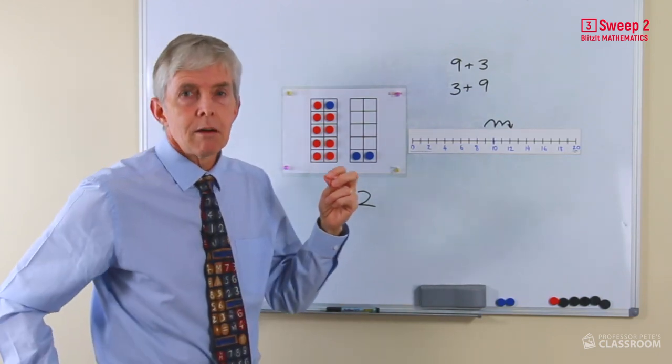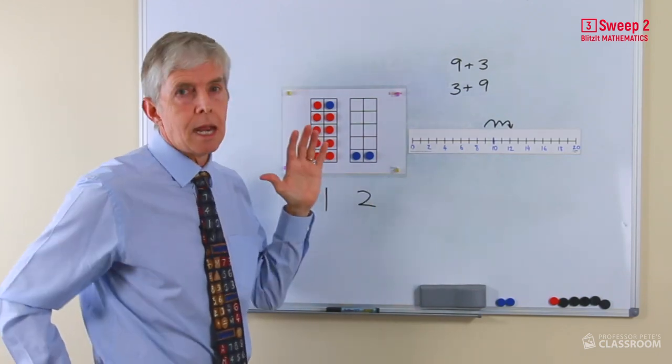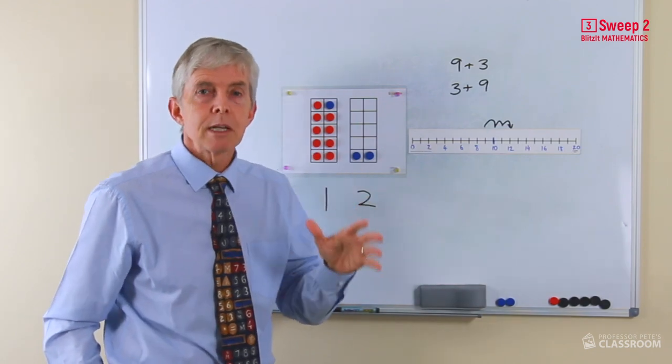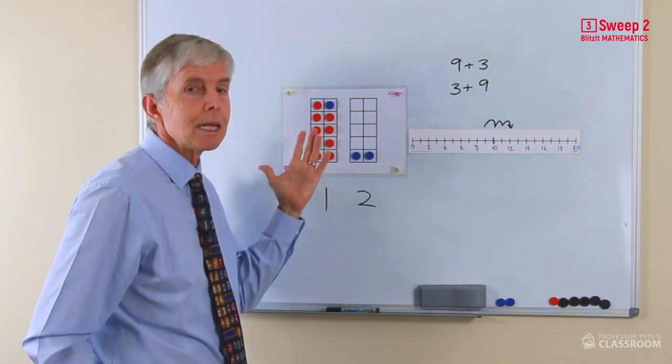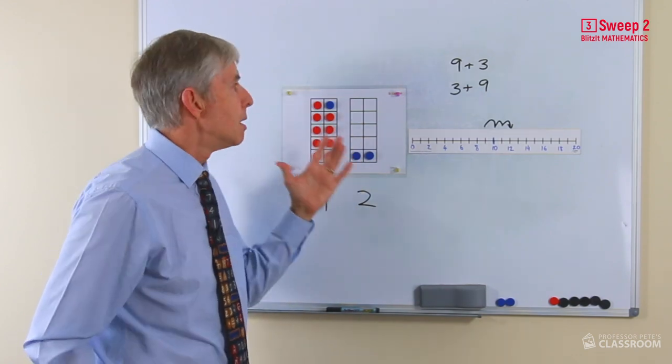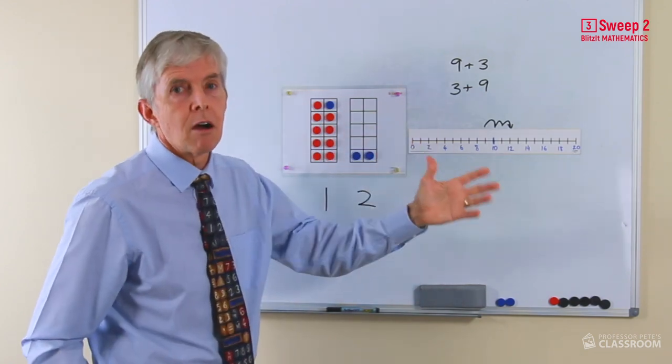Just a point here as we move beyond the 10, the basic number facts are single digit numbers being added together. So nine is the biggest digit that we'll add. And the biggest number fact will be nine plus nine, obviously.